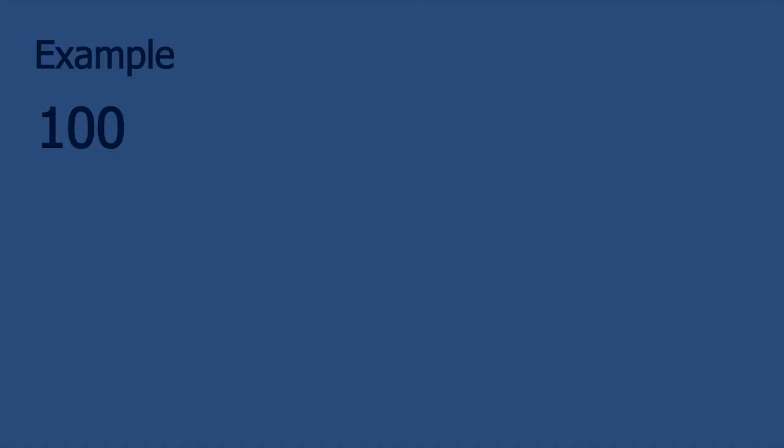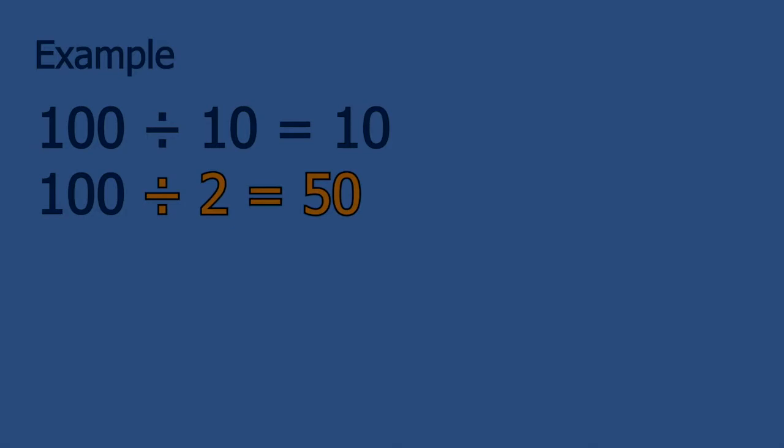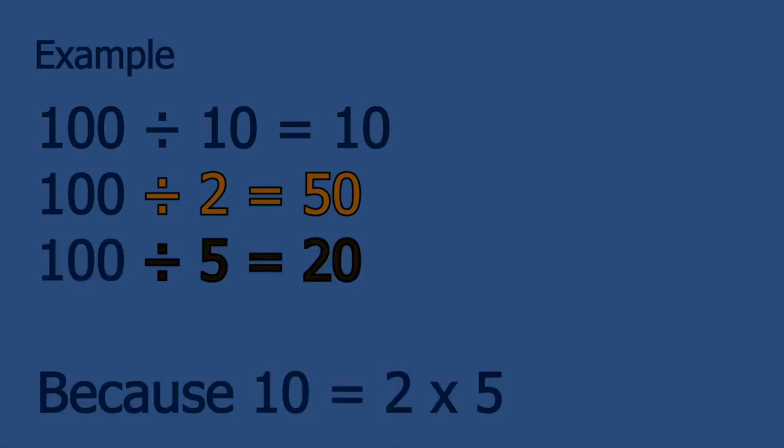Let's start off with this wonderful property about division. Basically, when you have one number and you know it can be divided by another number, what it also means is that the original number can be divided by the smaller factors of that other number. For example, let's look at 100. We know that 100 can be divided by 10. Since 100 can be divided by 10, it can be divided by 2 and by 5, since 2 and 5 are smaller factors of 10.